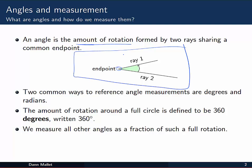There's two common ways to reference our angle measurements, and those are degrees, which you're probably most familiar with, and also radians, which you may have heard of as well. The amount of rotation around a full circle is usually defined to be 360 degrees, which we denote by writing it like this with this little circle symbol, meaning the degrees symbol. We measure all other angles as a fraction of such a rotation.